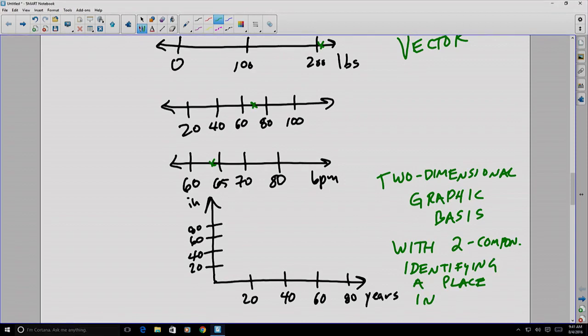This creates a two-dimensional graphic basis with two components identifying a place in space. And notice this is a place in two-dimensional space. So, for example, this point in space here, with the components 47 and 69, would represent someone who was 47 years old at the height of 69 inches.